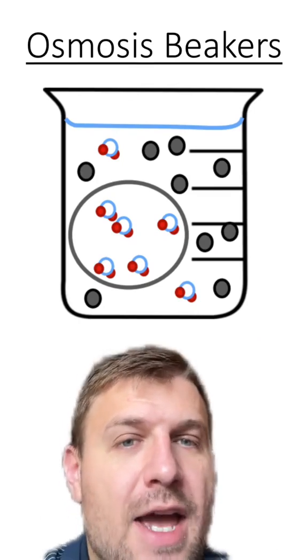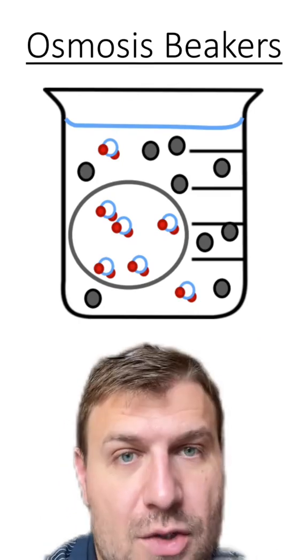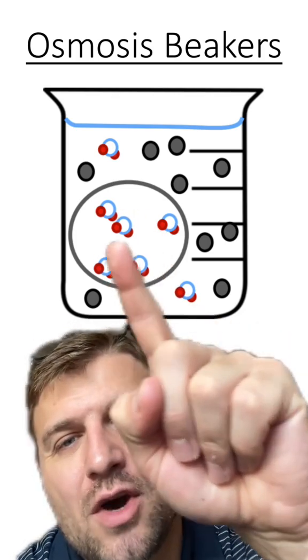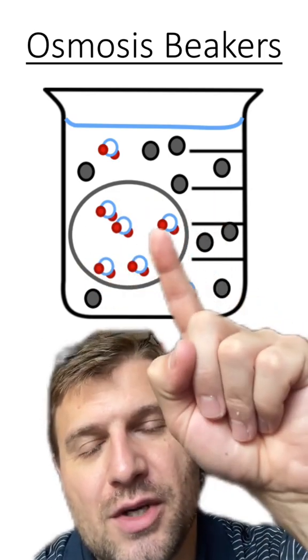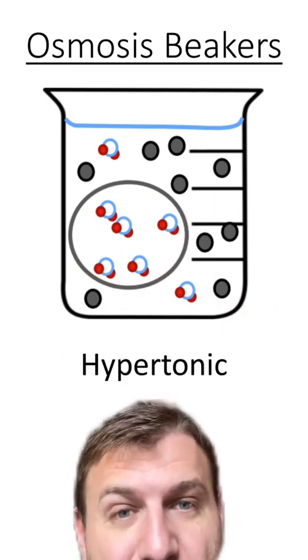And lastly, does this show a hypo, hyper, or isotonic solution? You can see there's a high concentration of water inside the cell compared with out, so water is going to travel from in to out. The cell is going to shrink, which means this is a hypertonic solution.